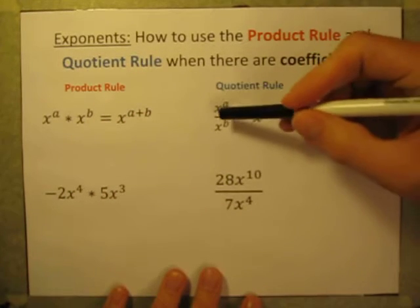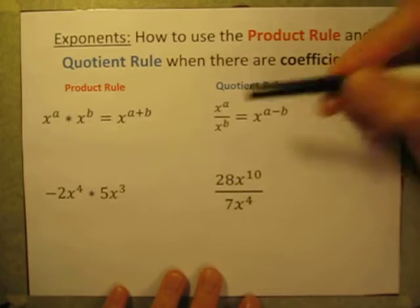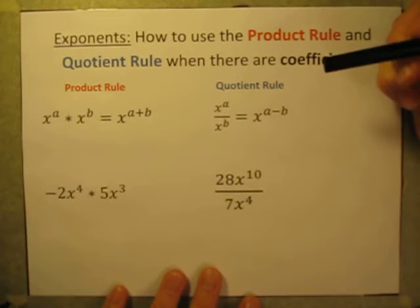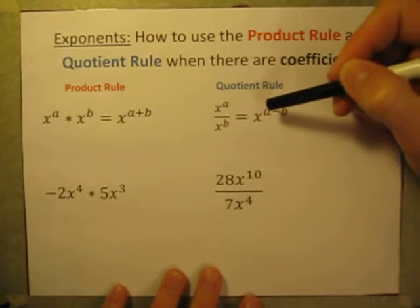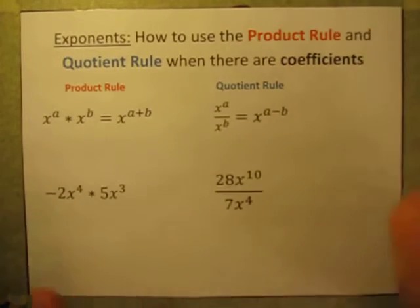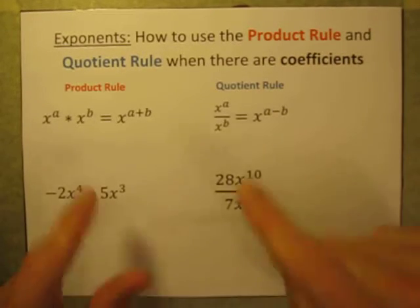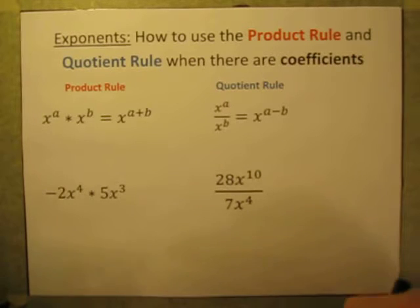For the quotient rule, x to the a divided by x to the b power is equal to x to the a minus b power. I've recorded videos that explain how to use those and show examples.